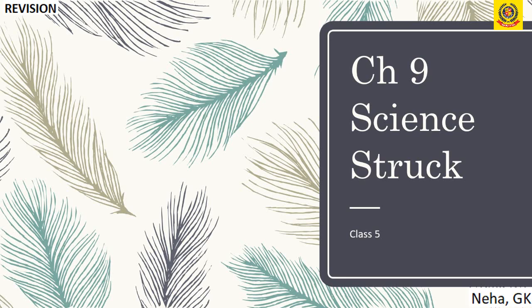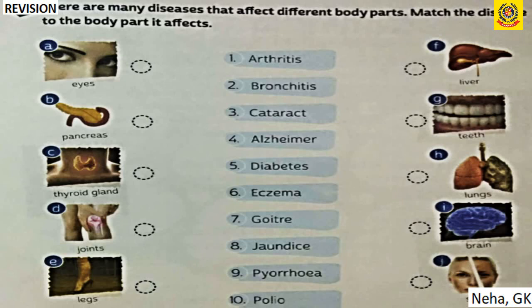Chapter 9: Science Struck — Part B. Match diseases to the body parts they affect: arthritis affects the joints; bronchitis affects the lungs; cataract affects the eyes; Alzheimer's affects the brain; diabetes affects the pancreas; eczema affects the skin.